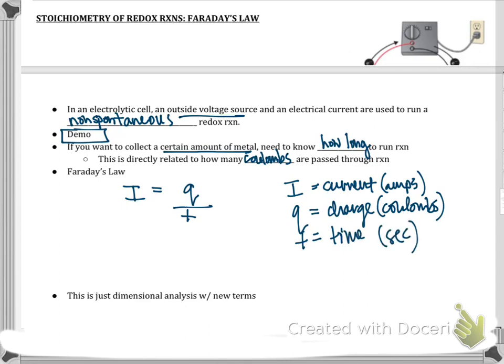So to do problems like what's shown at the bottom of your page, these are just dimensional analysis with new terms. You just have to get a little creative. Here's some tips for doing dimensional analysis. When you're asked problems like the ones shown below on your notes, you will need to incorporate Faraday's constant in most terms. Faraday's constant is the link between the charge and electrons.